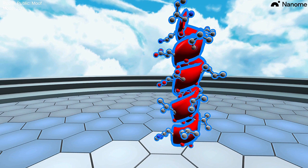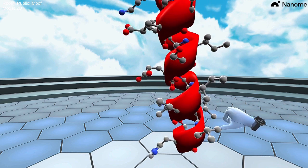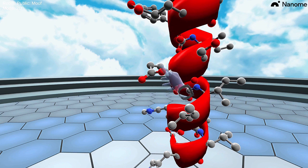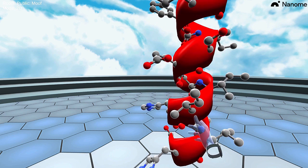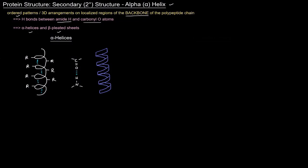If I bring that ribbon back, we can see here that the R groups are sticking out perpendicular to the axis of the helix. The axis is going straight up and down like this, and we can see the R groups are sticking out perpendicular to that.